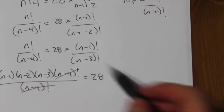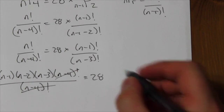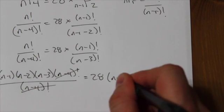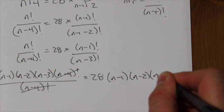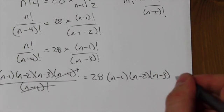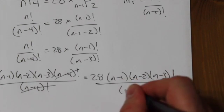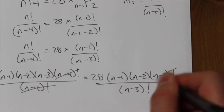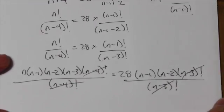Now, remember, n minus 1 is going to be bigger than n minus 3, so I'm going to expand the numerator to be n minus 1 times n minus 2 times n minus 3 factorial. Good, that's what I was looking for. And then, again, I can divide those out, which is wonderful.